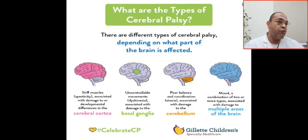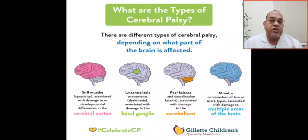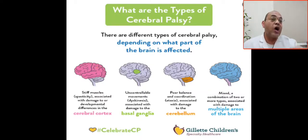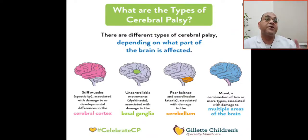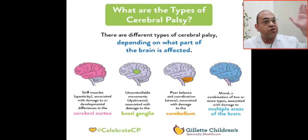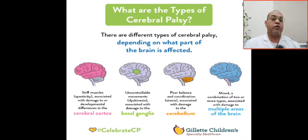This dyskinetic type is associated with damage to the basal ganglia and acute bilirubin encephalopathy. It is the second most common type associated with hypoxic-ischemic encephalopathy (HIE). The most common CP type associated with HIE is spastic quadriplegia, while the dyskinetic type is less common because the basal ganglia and thalamus are affected mainly by acute bilirubin encephalopathy.